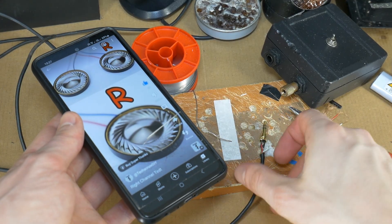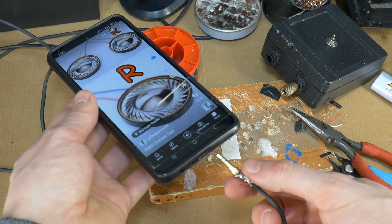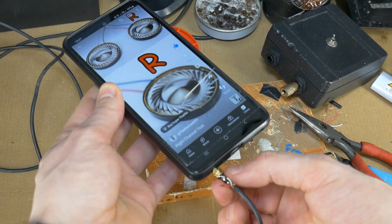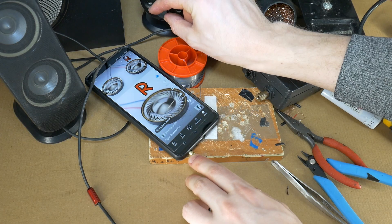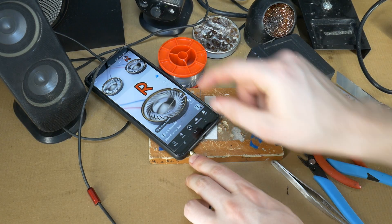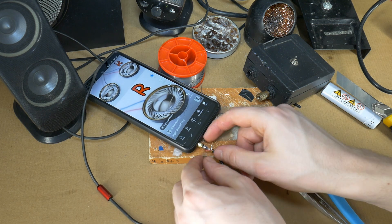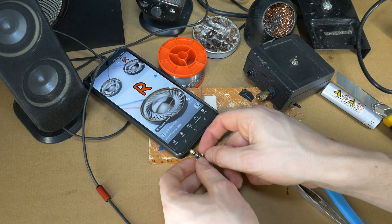Now comes the tricky part. It's a bit of a lottery since you don't know which colored wire is the left or right channel. So, play a left-right channel test audio on your device and put the wires to the jack contacts to find the correct wiring.